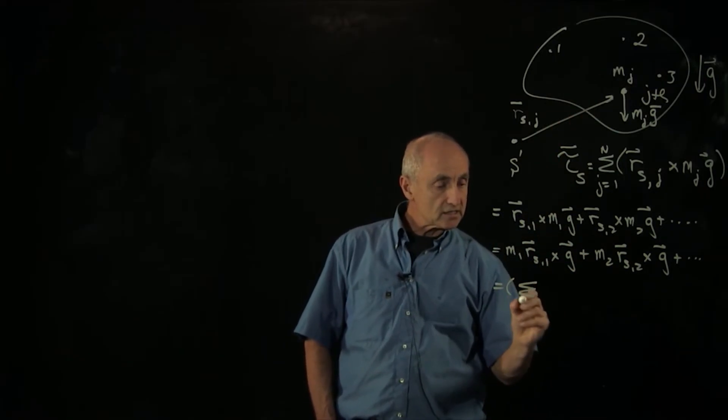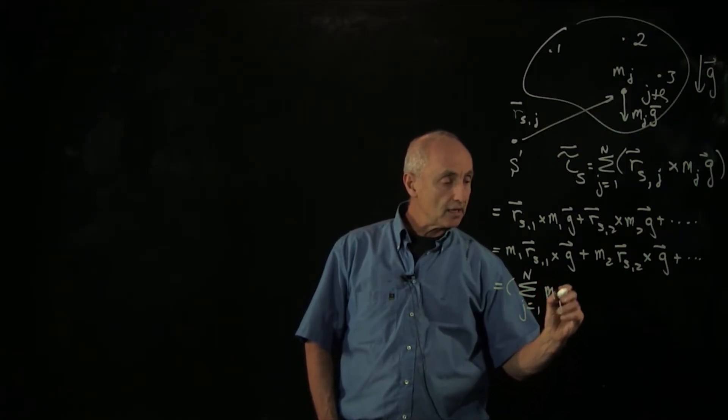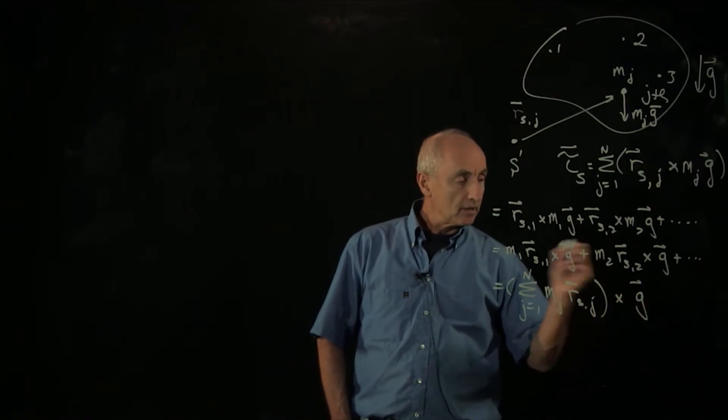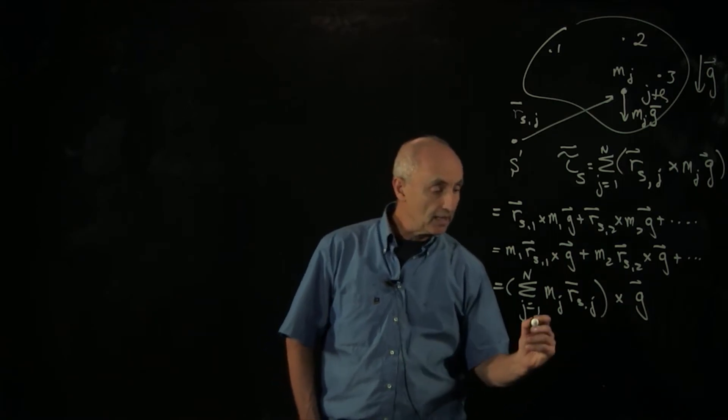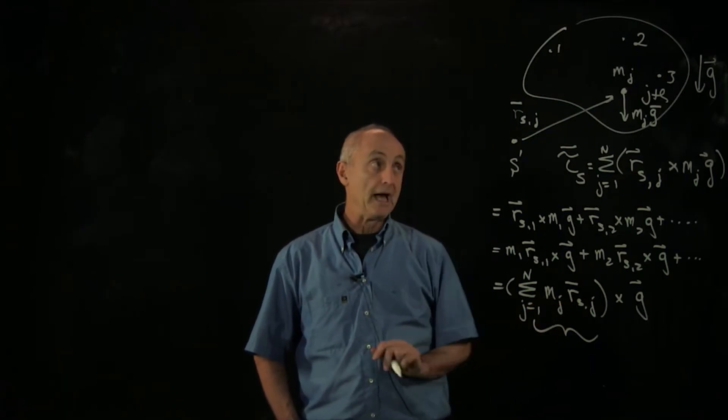So I can write this sum, j goes from 1 to n, as mj rsj and pull the g out of the sum, because every term has the same g in the cross product. Now let's focus on the meaning of this sum, where we're weighting position by mass.